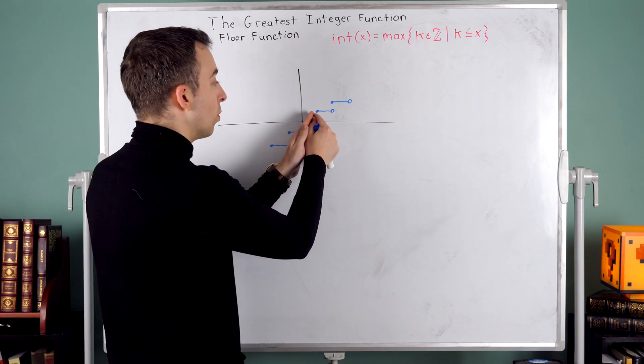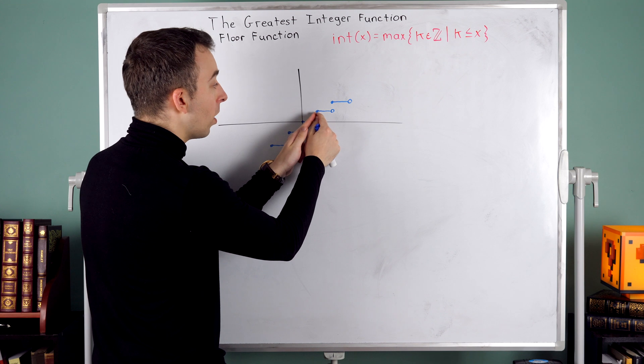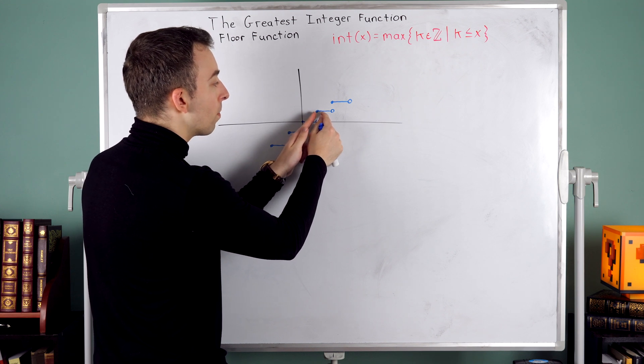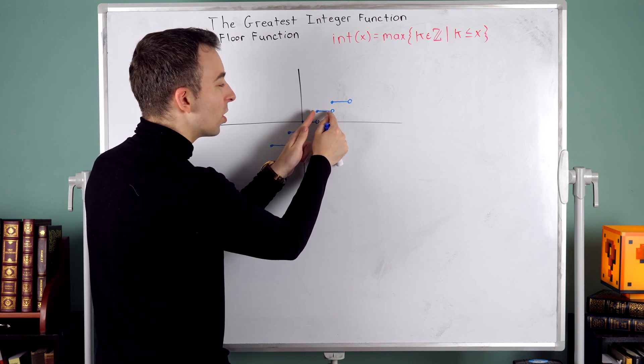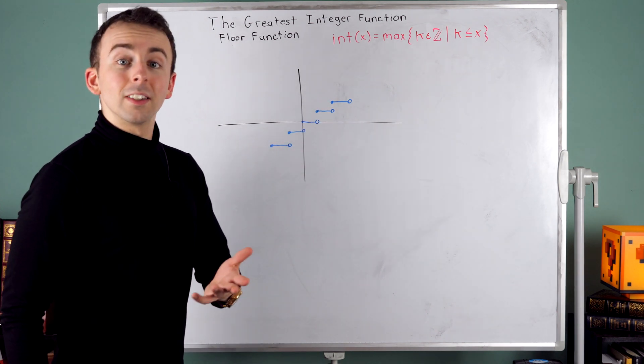Same thing happens between one and two. Everything rounds down to one: 1.1, 1.4, 1.6, 1.7, 1.8, 1.9, until you get to two, where the function jumps up to two.